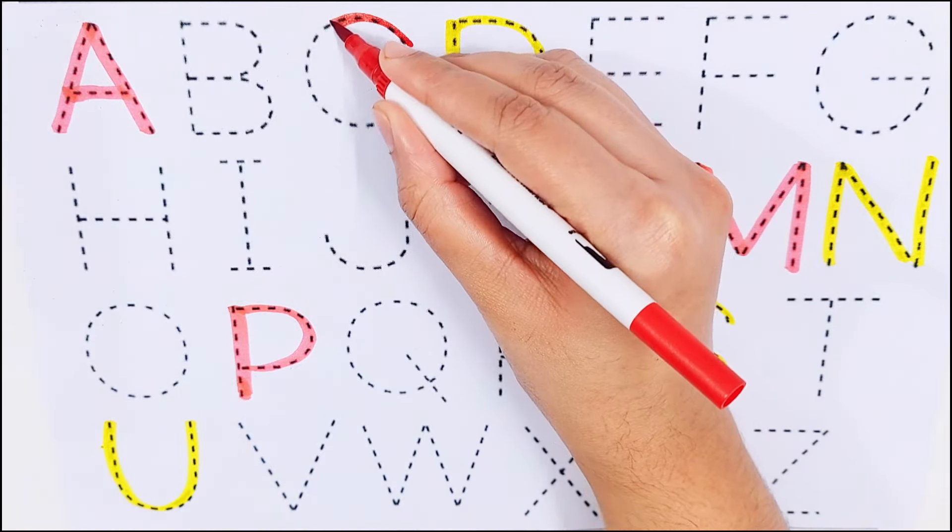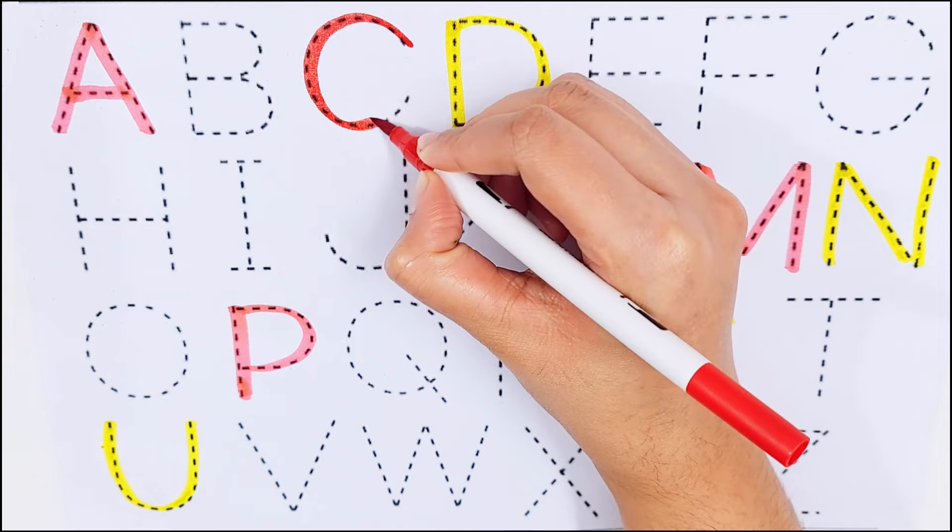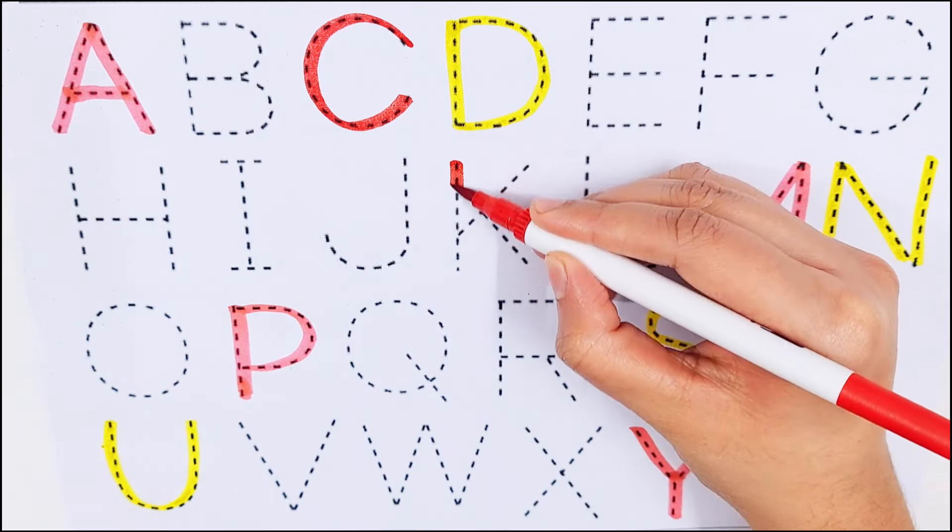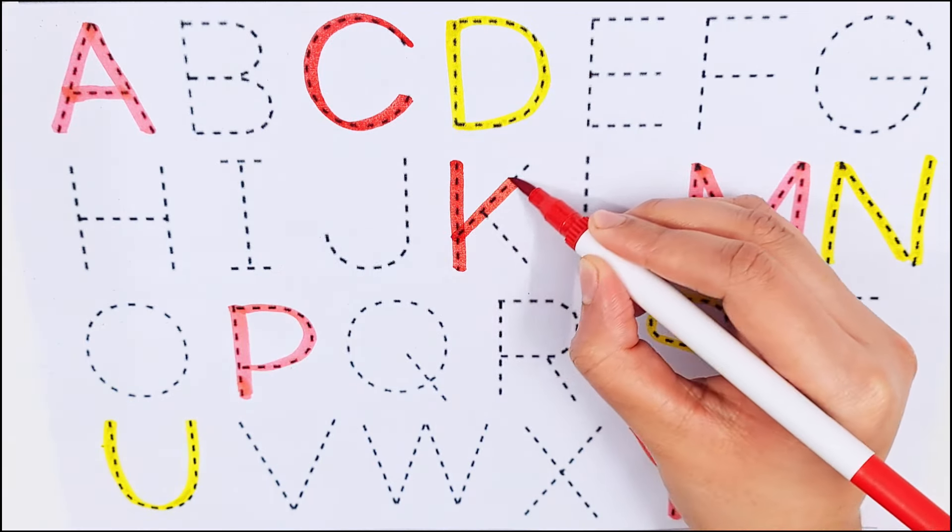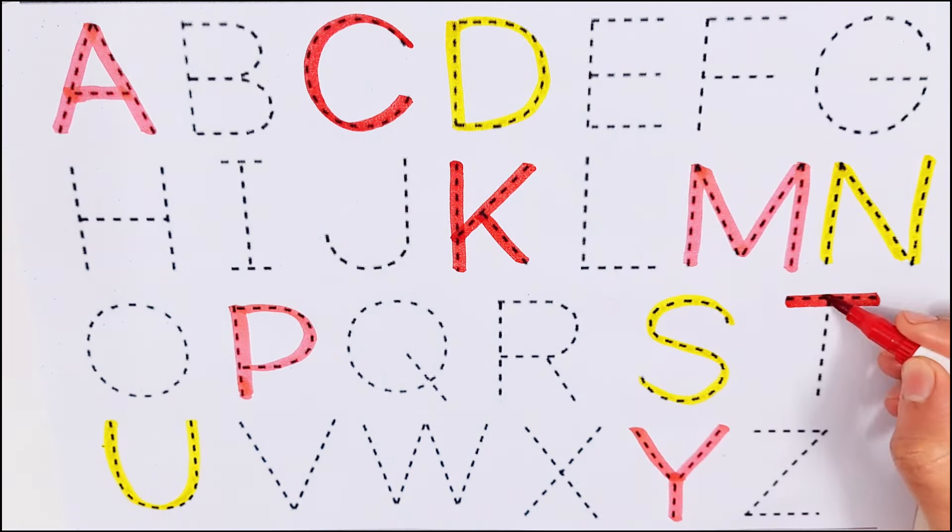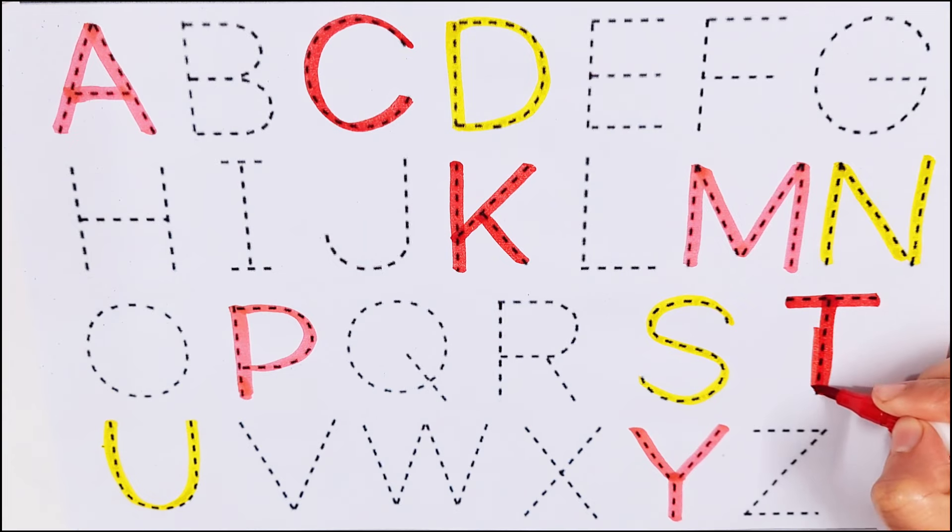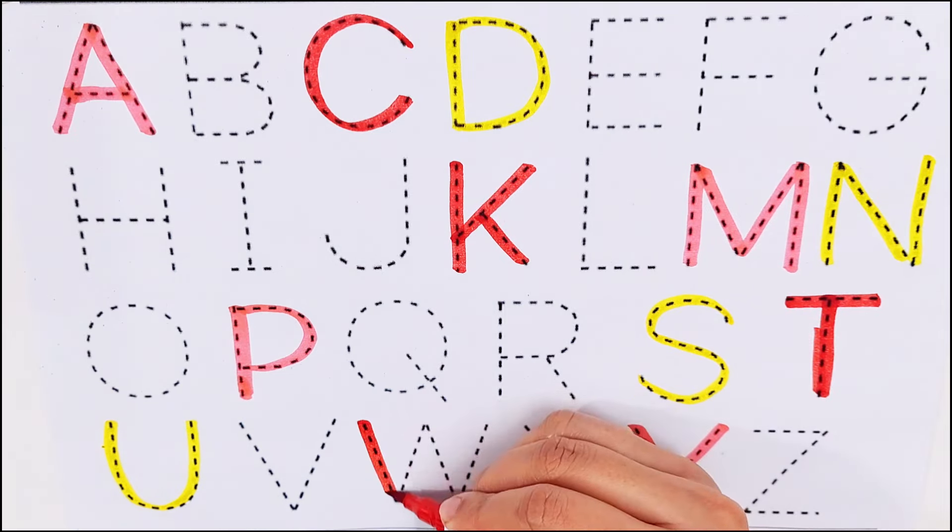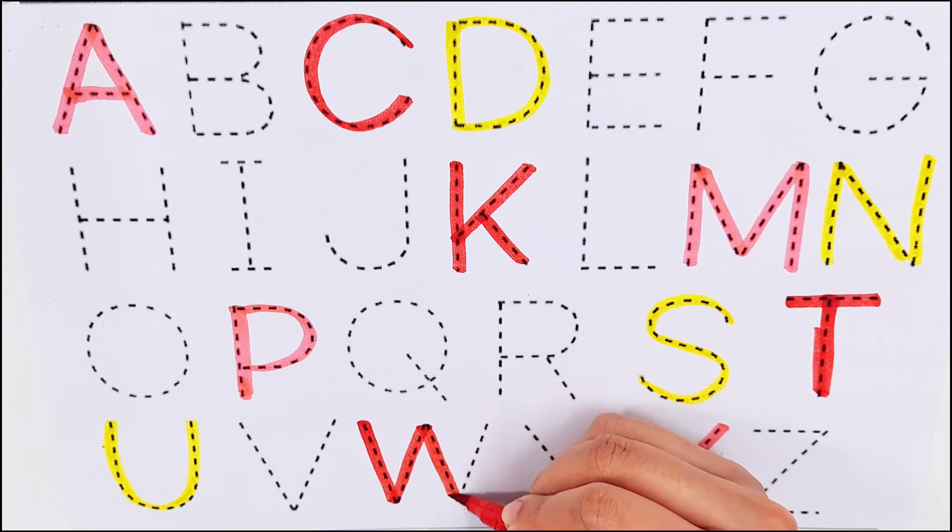C, C for cow. K, K for kite. T, T for train. W, W for watch.